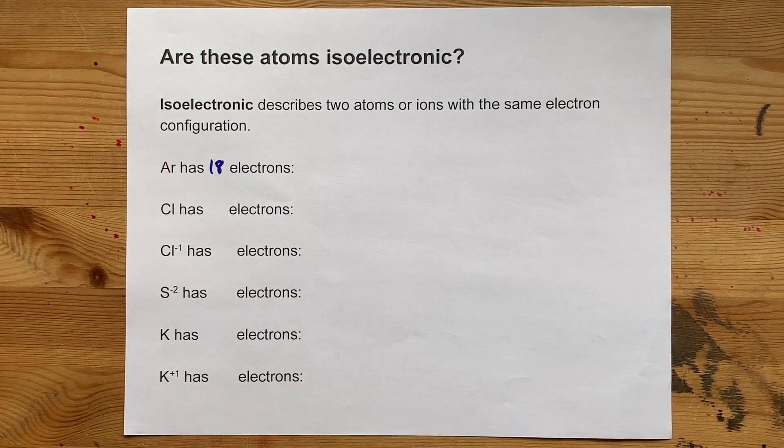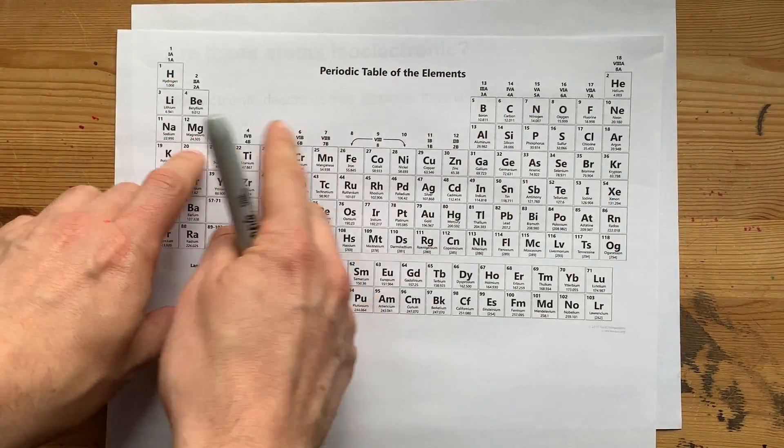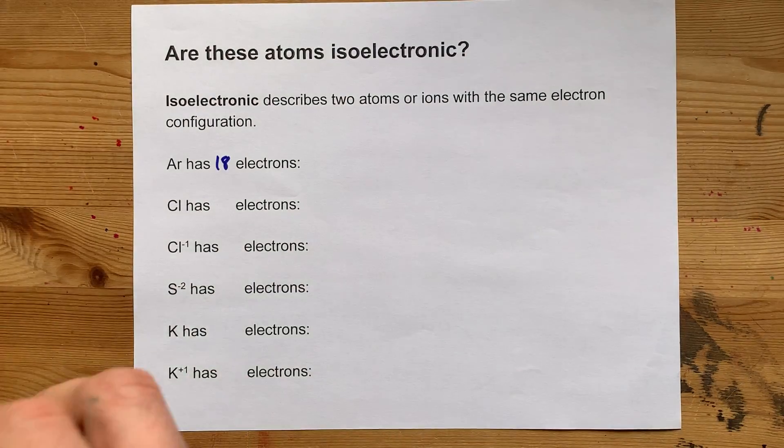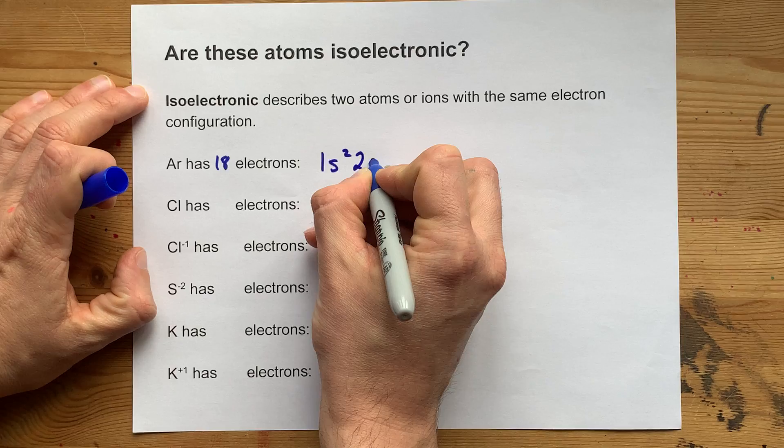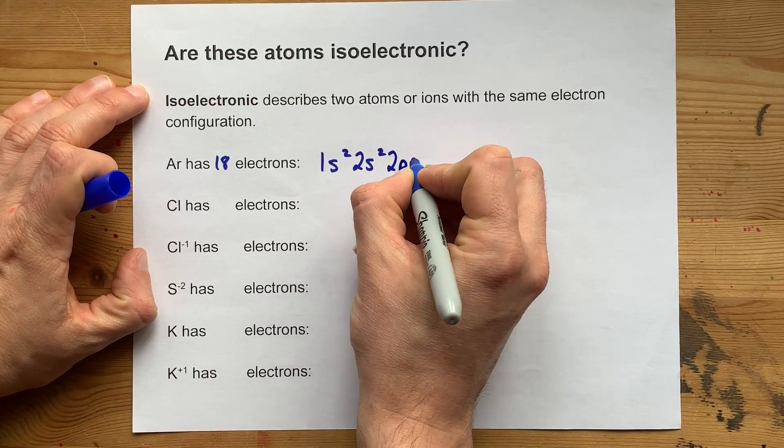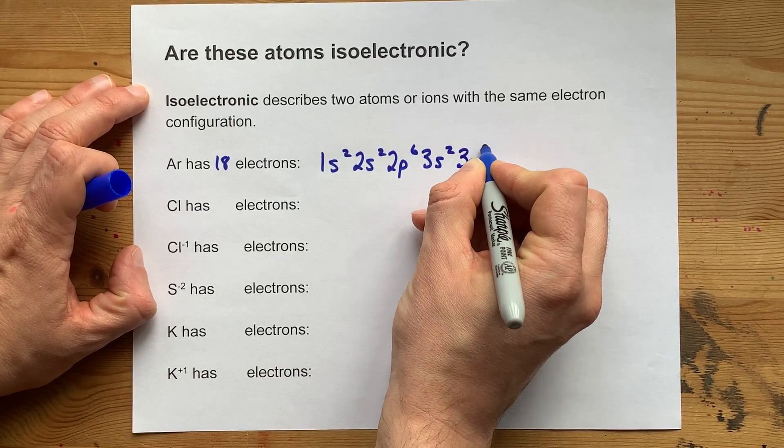Now, if you were to write out the electron configuration for that, it'd be 1s2, 2s2, 2p6, 3s2, 3p6. I'm going to draw that here just to make a quick point, but I won't belabor that too much through the rest of the video. There's my electron configuration.